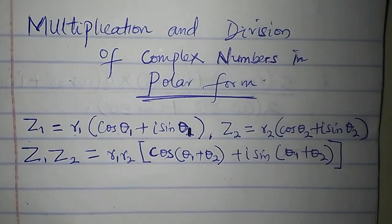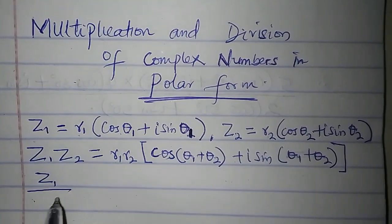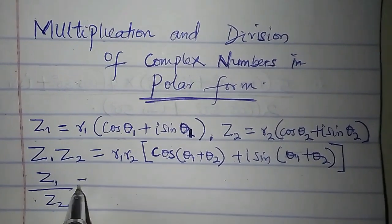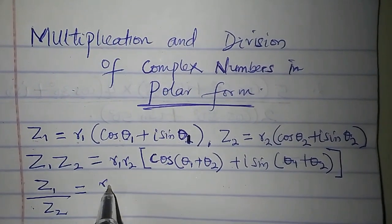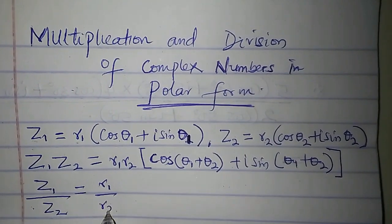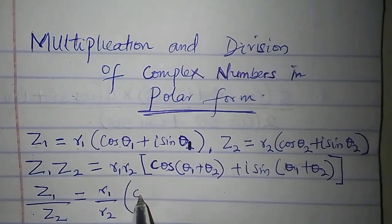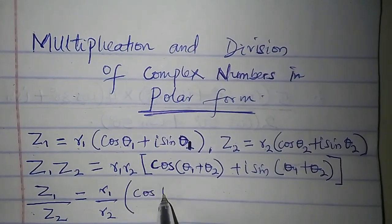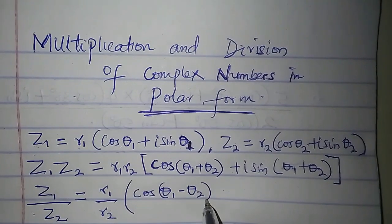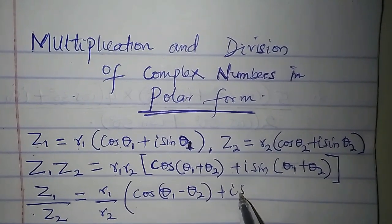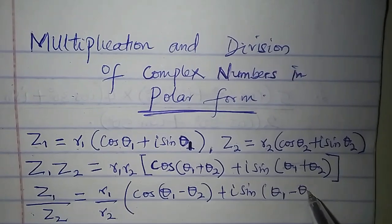What if I want to divide z1 by z2? z1 over z2 is equal to r1 divided by r2 times cos(θ1 − θ2) + i sin(θ1 − θ2).